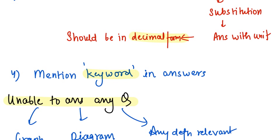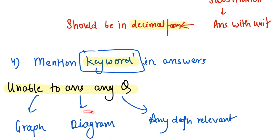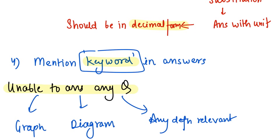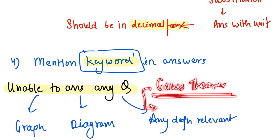Fourth, mention keywords in your answers — whenever you write definitions or state a theorem, include the keyword, as that is what fetches you marks. If you are unable to answer any question, respond with a graph, diagram, or a relevant definition. Even drawing the diagram of that particular topic can help you score full marks. Please don't leave any question blank — for example, if you can't state Gauss's theorem, just draw the diagram.